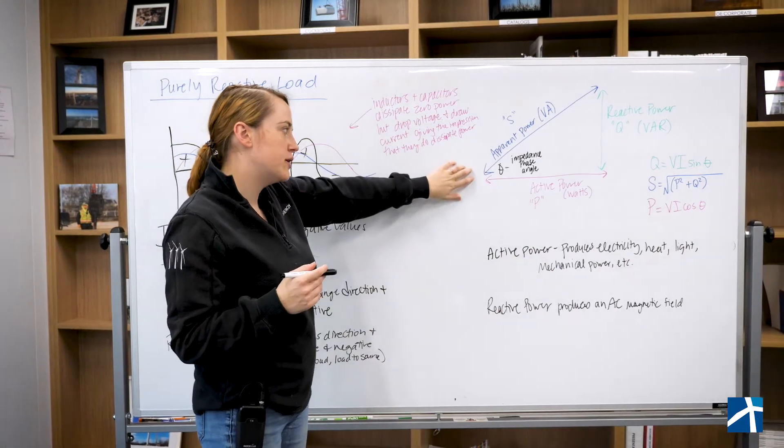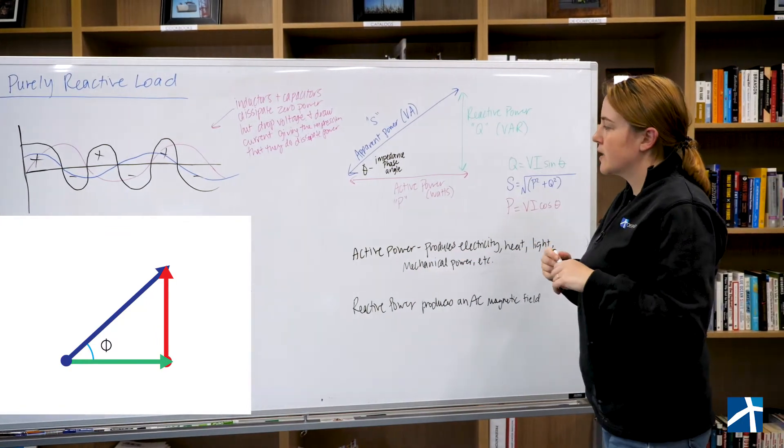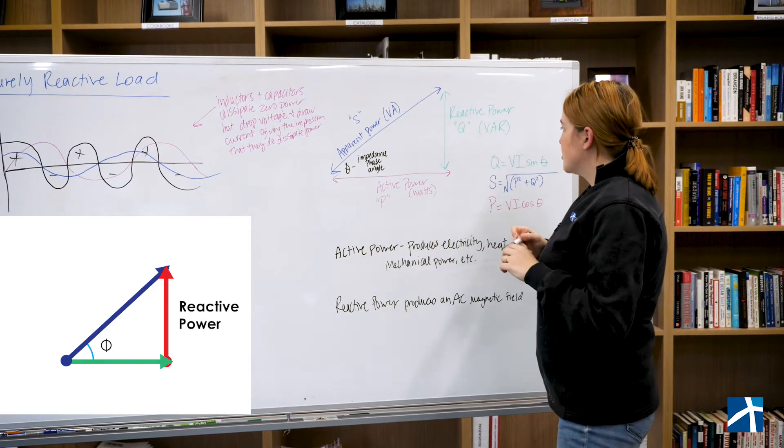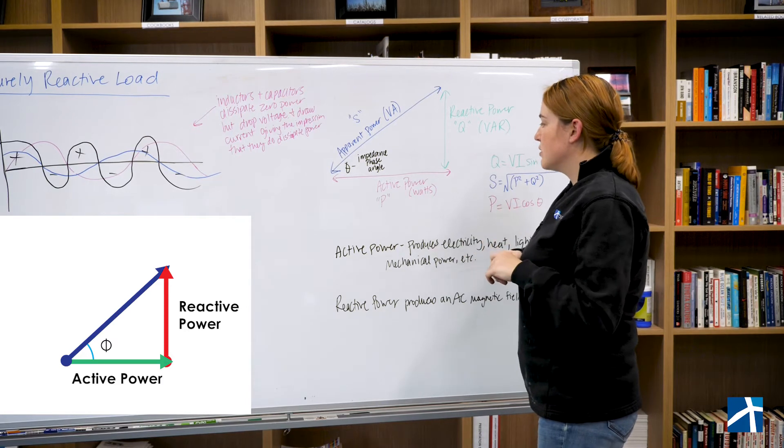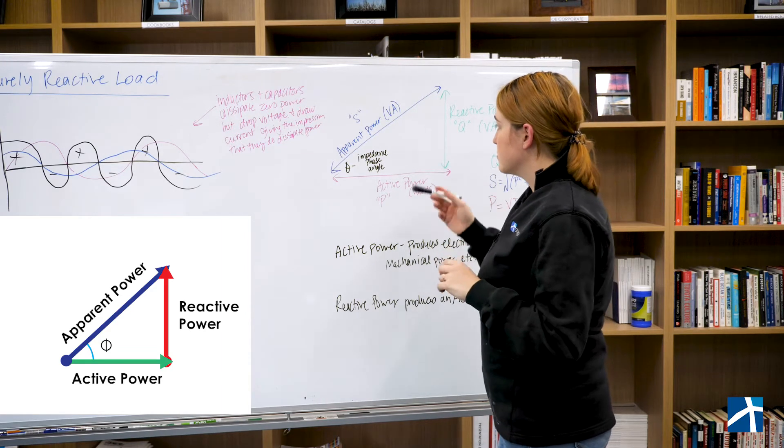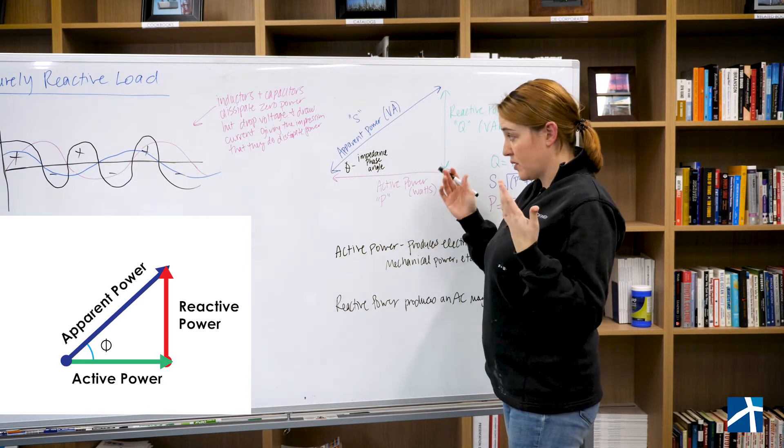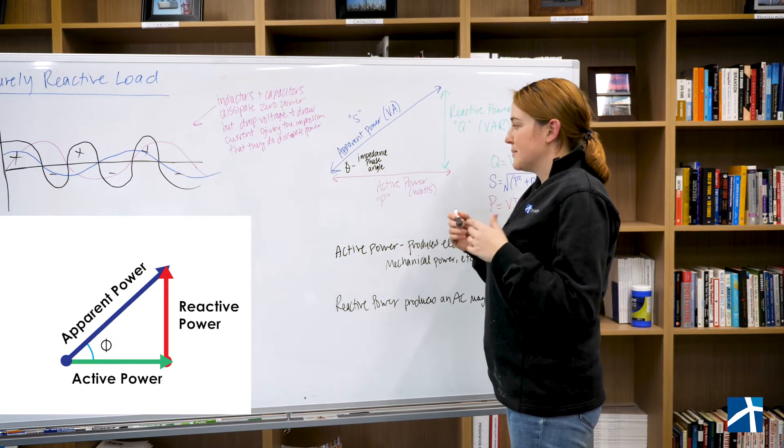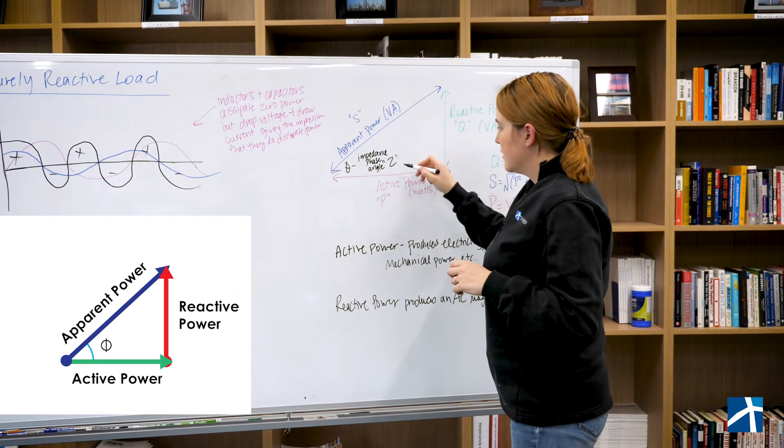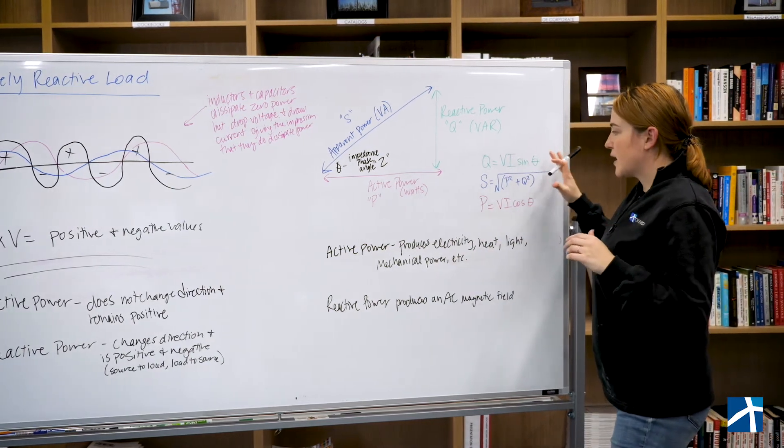So we kind of showed this on that first board that we were looking at. This is what we call the power triangle. And this is where we talked about those three types of power. And so reactive power, or Q, measured in VAR, active power, or P, measured in watts, and apparent power measured in VA, also known as S. And then the angle between active power and apparent power is also called theta in this instance, but is impedance, is the impedance phase angle. Sometimes you see that as Z.